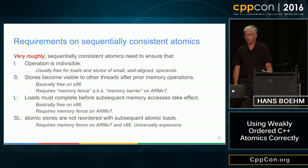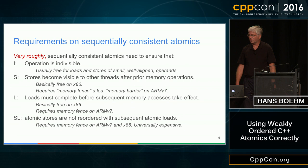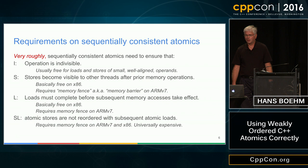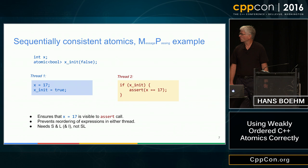The indivisibility is generally free on modern hardware. Store ordering is free on x86 but costs a memory barrier instruction on ARMv7. Loads have a similar situation. Ensuring the ordering of an atomic store followed by a subsequent atomic load is expensive on both ARMv7 and x86. So the sequentially consistent atomic examples I'm about to show illustrate these guarantees — this is the canonical MP or message passing example.